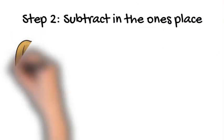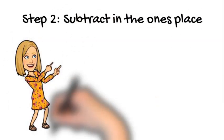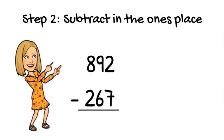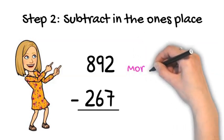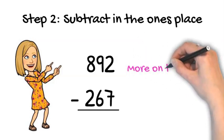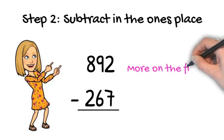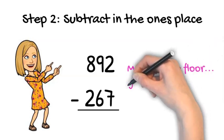Step 2, now we're ready to subtract in the ones place. So, in this problem, we have 2 take away 7 in the ones place. Is that more on top, or more on the floor? You're right, it's more on the floor, so we will have to go next door to ask for help. If I had 2 cookies, I could never take 7 away.